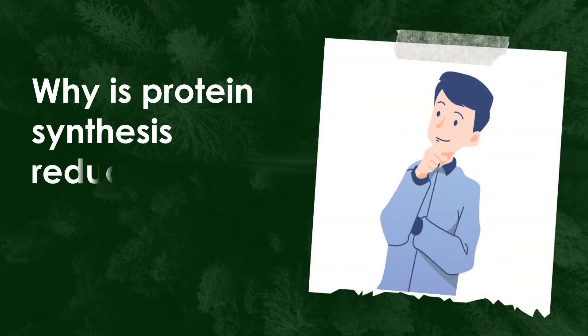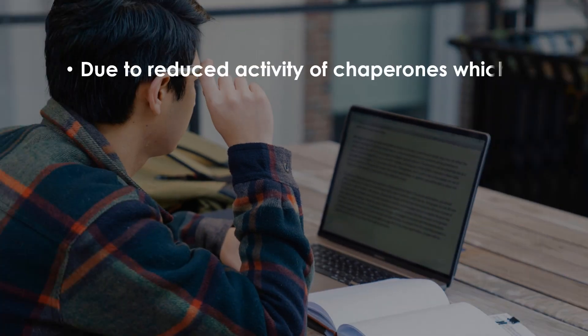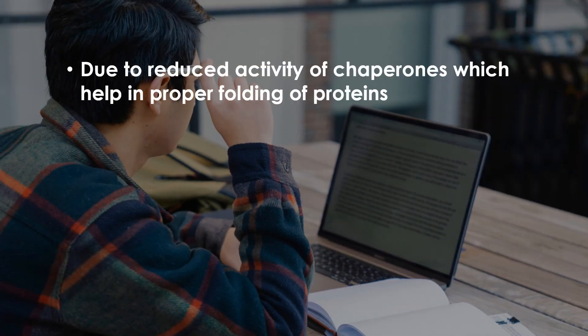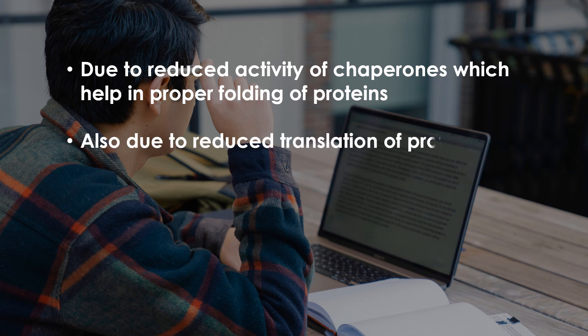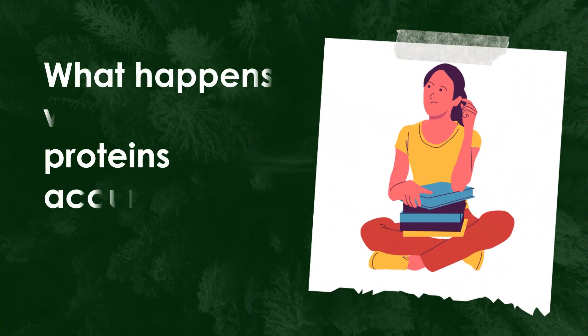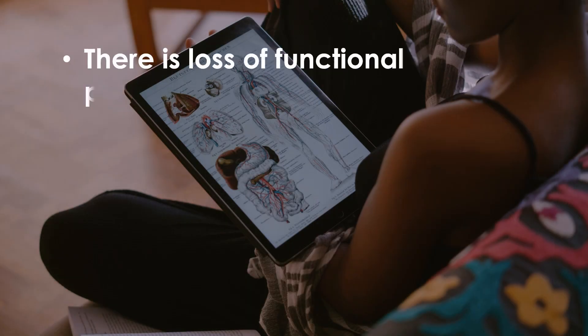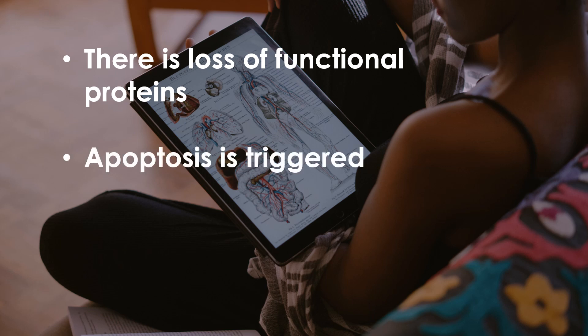Why is protein synthesis reduced as we age? This is due to reduced activity of chaperones, which help in proper folding of proteins, also due to reduced translation of protein, and reduced activity of proteasomes which destroy misfolded proteins. What happens when misfolded proteins accumulate in cells? There is a loss of functional proteins, apoptosis is triggered, and hence increased degradation.